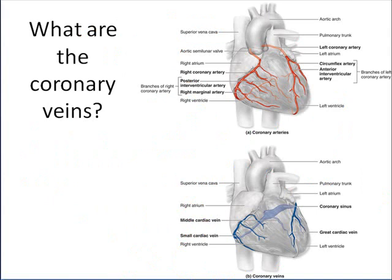Just as coronary arteries deliver oxygenated blood to the heart muscle, coronary veins return that deoxygenated blood so it can travel to the pulmonary circuit to pick up more oxygen. The coronary veins include the middle cardiac vein, the small cardiac vein, the coronary sinus — a very large vessel on the posterior surface of the heart — and the great cardiac vein running down the anterior interventricular septum. These all collect deoxygenated blood from the heart tissue itself and return it to the right atrium.